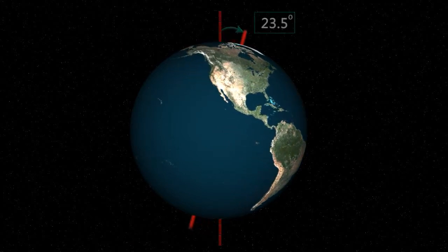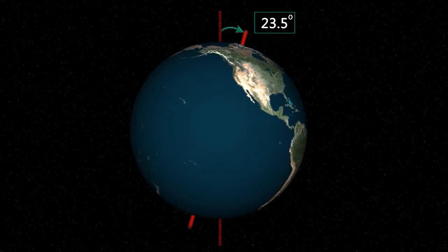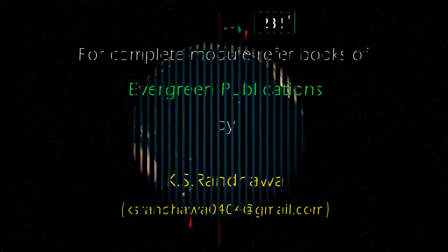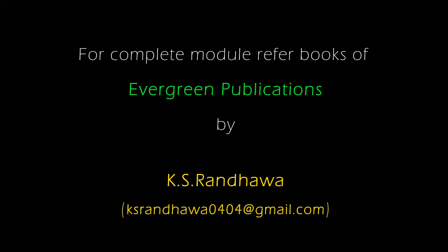It is tilted at an angle of 23.5 degrees from a perpendicular to the orbital plane. Thus, the axis of the Earth makes an angle of 66.5 degrees.